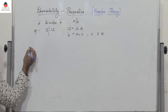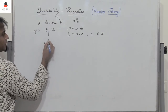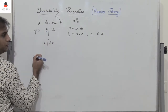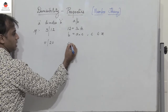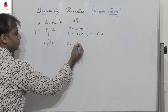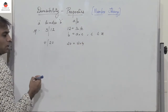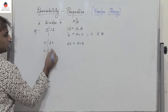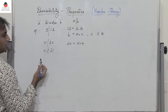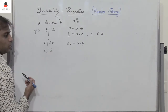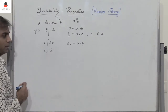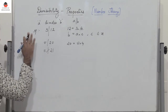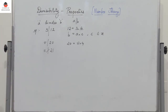Let's take a few more examples. We say that 5 divides 20, or we can say that 20 can be written as 5 into 4, whereas 5 does not divide 21 — or 21 is not divisible by 5. So with this fundamental understanding of divisibility, let us discuss a few properties.